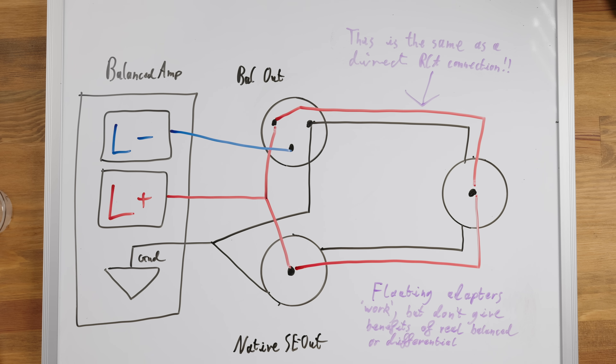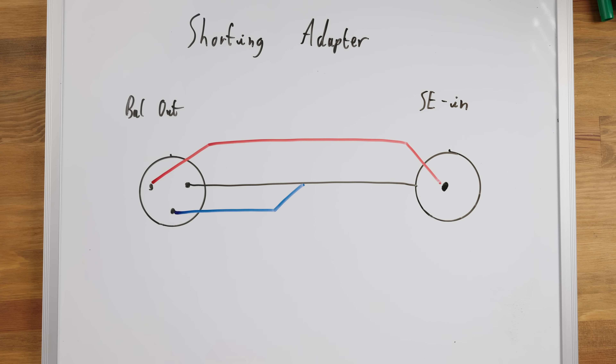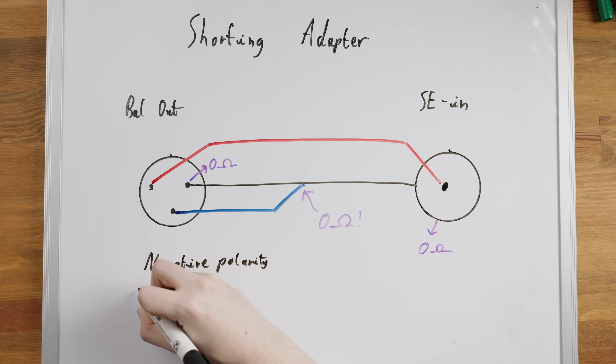You'll get the same voltage as if you connected to the single-ended output because you're not looking at the difference between the positive and negative — the negative isn't connected — so there's no advantage to doing this. You're better off just connecting to the single-ended output of your device, but it should work fine. The real risk with adapting balanced to single-ended, however, is that a lot of adapters short the negative polarity of the output straight to ground, meaning the negative polarity output of your device is seeing a zero ohm load — it is being straight-up short-circuited.